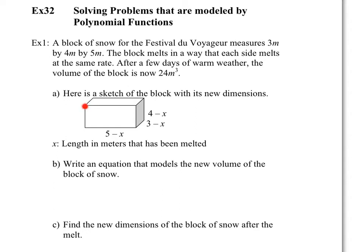Example one: we're going to start with a block of snow. A block of snow is three-dimensional, and for Festival des Voyageurs it measures three meters by four meters by five meters. The block melts in a way that each side melts at the same rate, which means if the height is losing some length, the other sides will also be losing length. So after a few days of warm weather, the volume of the block is now 24 meters cubed.